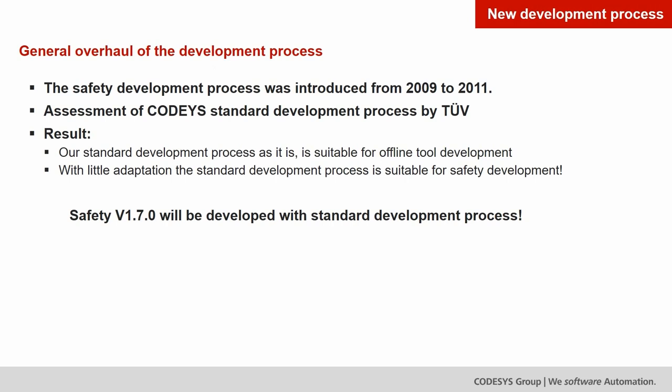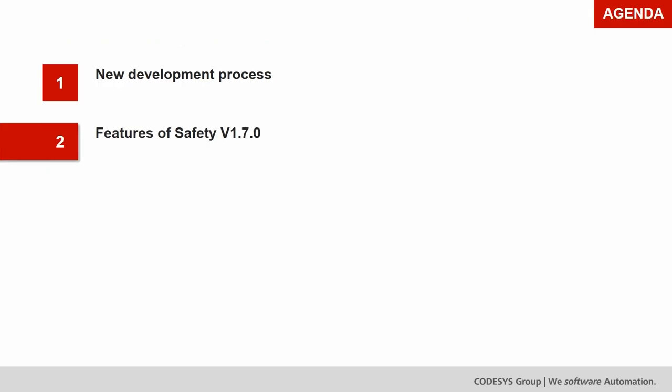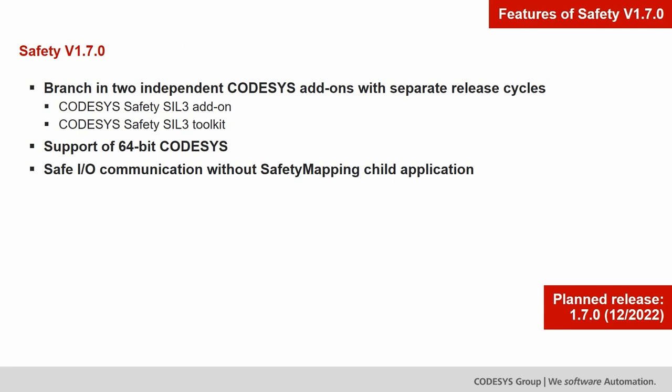The benefits of this switch are that all developers in the company know the standard development process, and we can reuse many well-established processes and tools, making the whole release go much smoother than before. Let's look at the three main features of version 1.7.0.